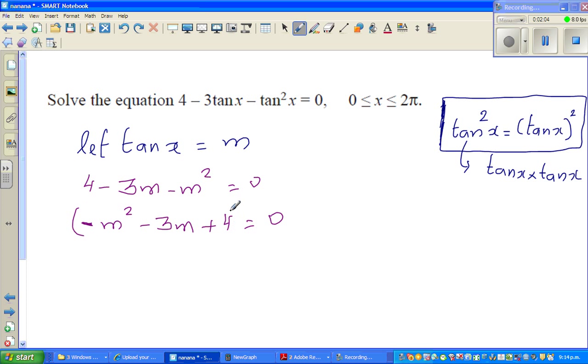I'm multiplying this whole with negative 1. So I have to also multiply this with negative 1. So the next step will become m squared plus 3m minus 4 is equal to 0.